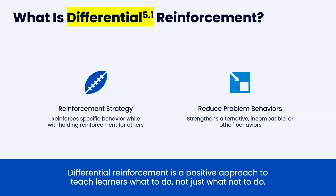But what is it? It's a reinforcement strategy where you reinforce specific behaviors while withholding reinforcement for others. You don't necessarily have to withhold as part of differential reinforcement, but it is more effective with extinction, which means withholding reinforcement for certain behaviors. What this does is strengthen alternative, incompatible, or other behaviors. It communicates to the person that if you engage in these positive behaviors, you get what you want, and if you engage in problem behaviors, you don't. This is why I call this a teaching strategy — you're not only teaching new behaviors, but building them.